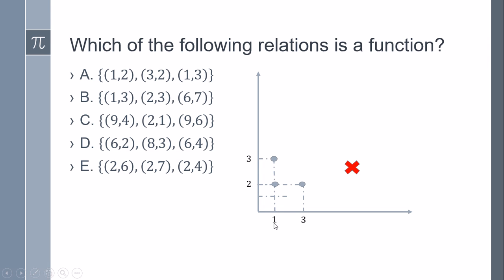The second case, option B, has (1,3), (2,3), and (6,7). In this case, we see how each value in the domain corresponds to only one value in the range or y-axis.